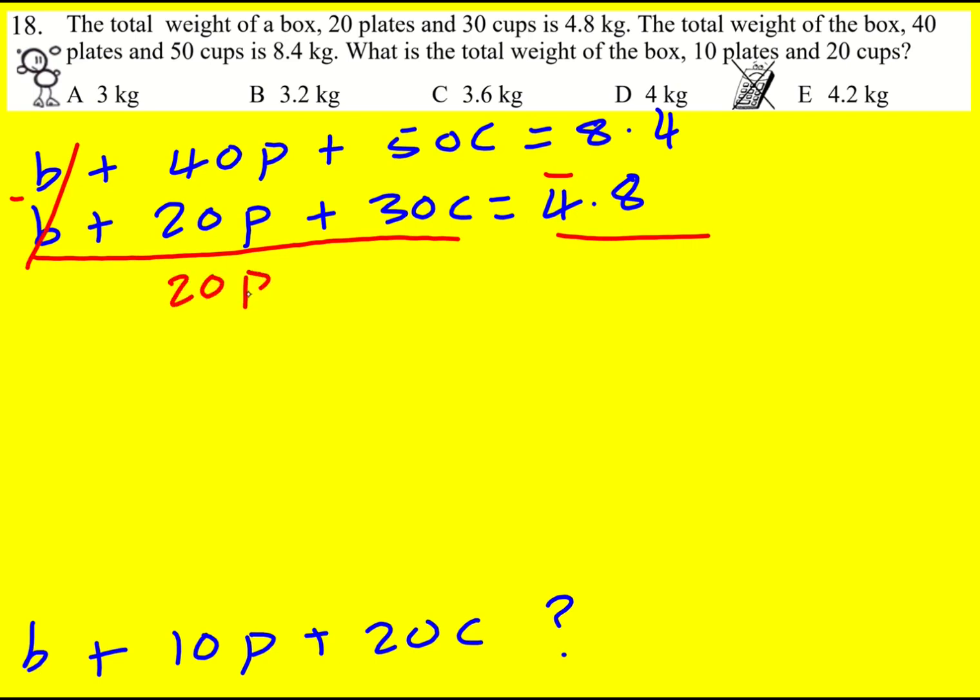I'm left with 20P plus 20C equals 8.4 minus 4.8 which is going to be 3.6. And that means I can divide by 2. 10P plus 10C is going to be 1.8.